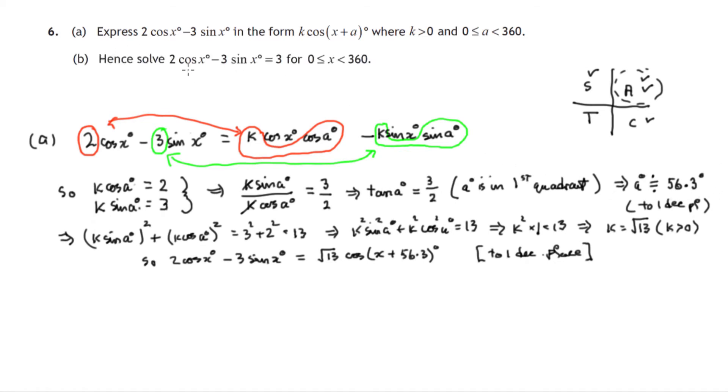So let's move on now and have a look at part B. We're asked to therefore, hence, means we use the result we've got from part A, hence solve this equation. So the equation we're asked to solve involves on the left-hand side the expression that we've changed or written in a new form. So let's use our answer, which is root 13, cosine of x plus 56.3. We're asked to solve when is that equal to 3. And if we divide both sides by root 13, we're trying to solve the cosine of an angle. The angle happens to be x plus 56.3, cosine of an angle is 3 over root 13.